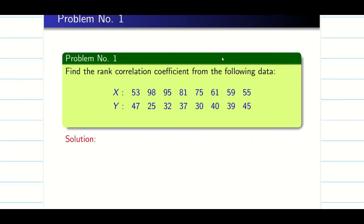Let us see the problem. Find the rank correlation coefficient for the following data. Here it is very important whether data is given or rank is given. If rank is given, the problem is very simple. If data is given, we add an extra task to first find the rank, then proceed.